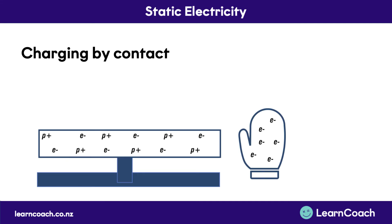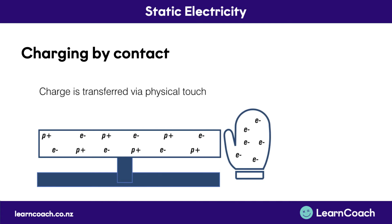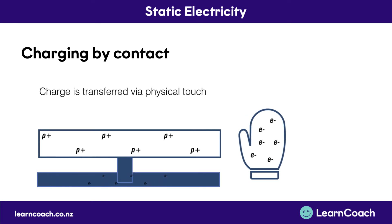Another way to charge an object is by contact. If we use our negatively charged glove and touch a rod which is earthed — connected to the ground — we can expect the charge to be transferred via physical touch. As the glove comes in, the electrons are repelled because they're like charges, and they move through the earthing system into the earth, so now the rod is positively charged. Importantly, only electrons can be displaced. That's because electrons are in the valence or outer energy shells, whereas protons — the positive charges — are locked up in the nucleus of the atom, so only electrons are able to be rubbed off.